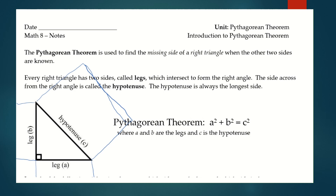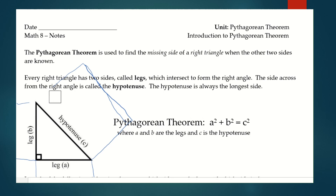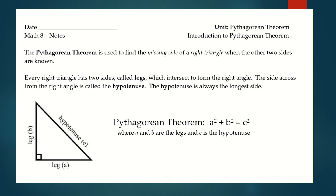Why was this theorem important? It's important because it's used to find missing sides of a right triangle when the other two sides are known. The most important thing is this only applies to right triangles — if you don't have a right triangle, the Pythagorean theorem cannot be used.